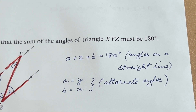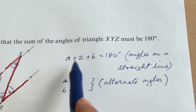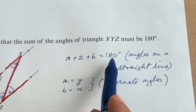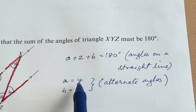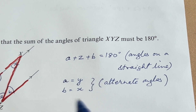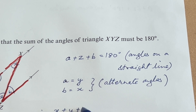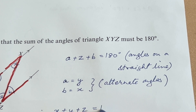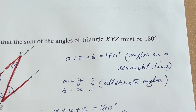Since A plus Z plus B equals 180 degrees, and A equals Y while B equals X, therefore X plus Y plus Z — the three angles inside the triangle — must also equal 180 degrees.